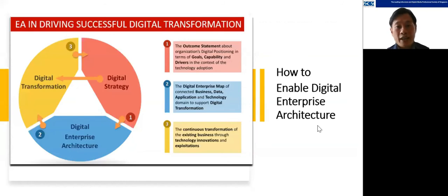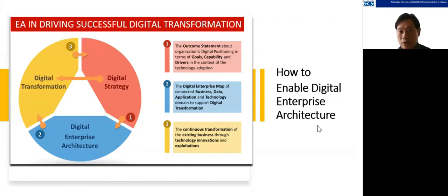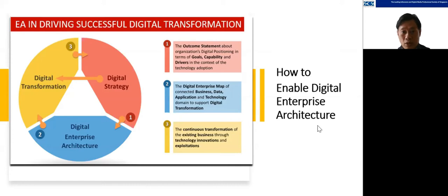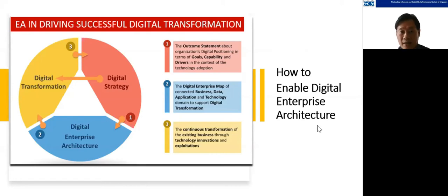How do you enable digital EA? This is a process for digital EA transformation that can be iterated. The first step is digital strategy: we look at the organization's goals, capabilities, and drivers in the context of technology adoption. What does the company want to do, what can it do, and what are the push or pull factors for the organization? This high-level information is often not available, and we need to map it out to have context for the whole organization.